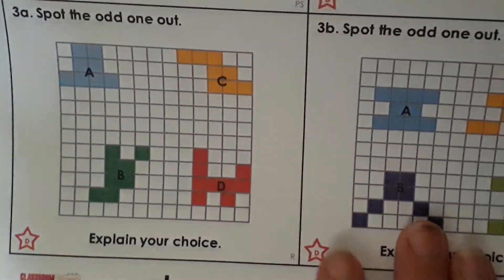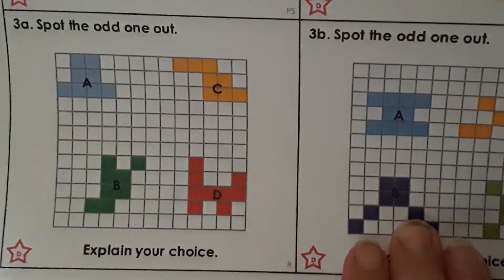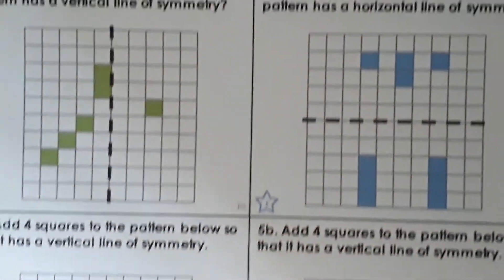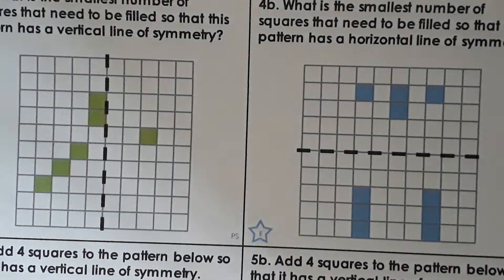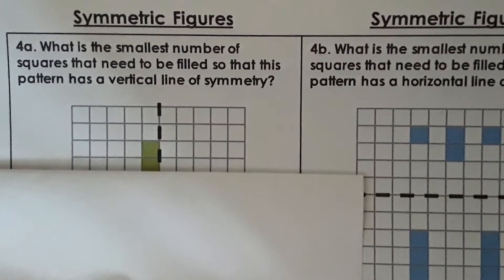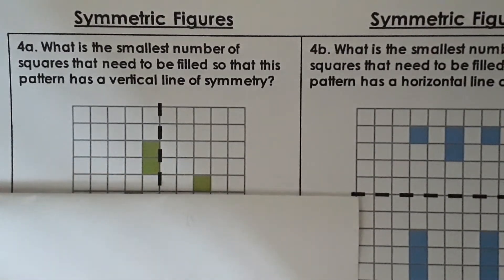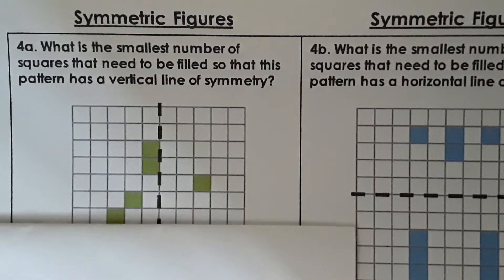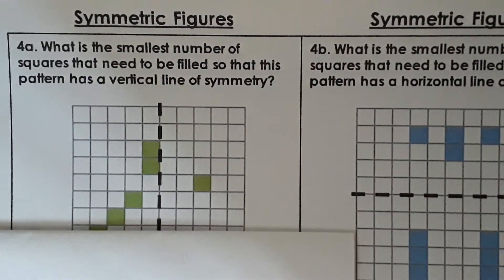All right so really quick today you'll see the questions are same on the expected. What is the smallest number of squares that need to be filled so that this pattern has a vertical line of symmetry? Again make sure you answer the question. All right so what is the smallest number of squares? Okay so color them in and then count them.